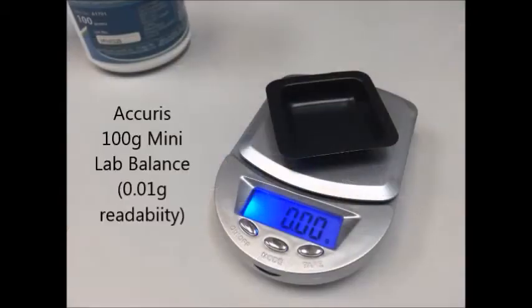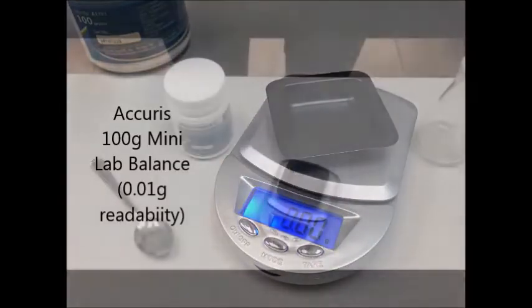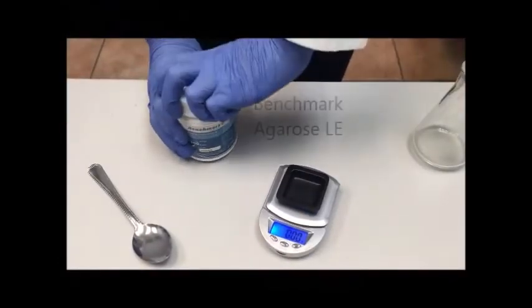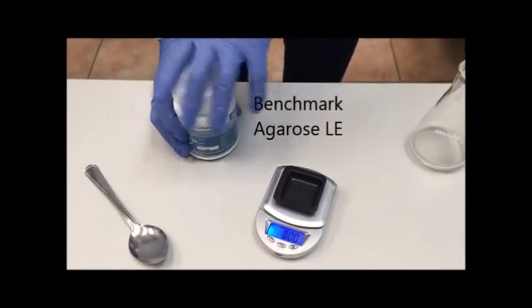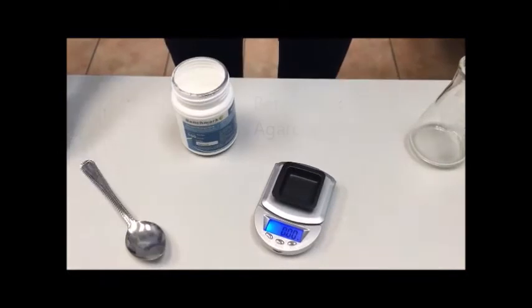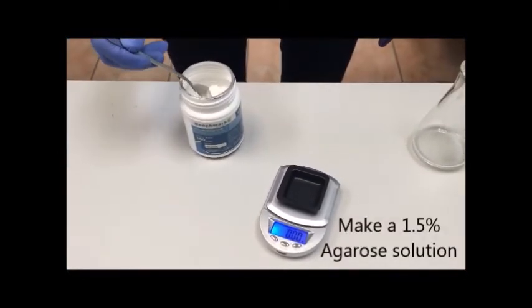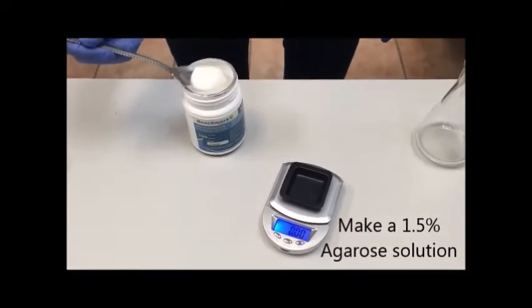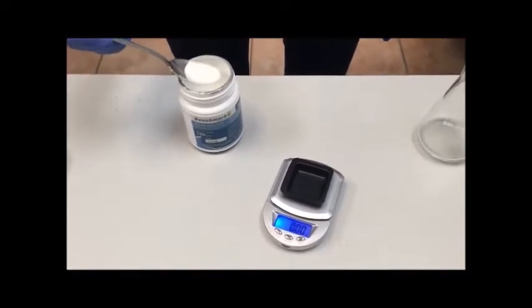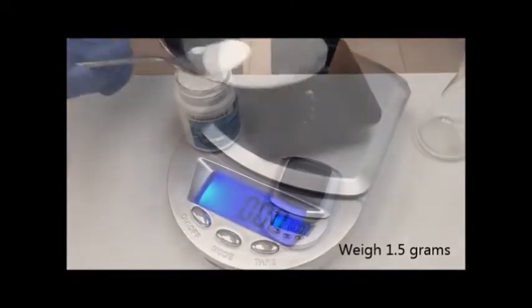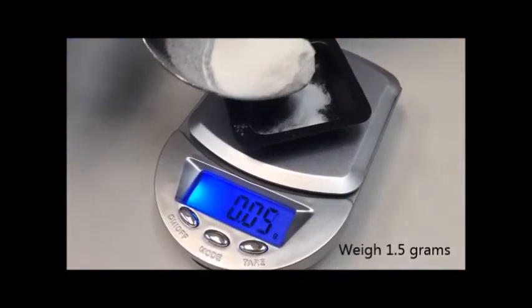The next step is to make our agarose solution. We're going to be using the Acurus 100G Mini Balance to weigh out some agarose powder. Here, we're making a 1.5% agarose solution, which is suitable for the size range of DNA we'll be separating. First, we weigh out 1.5 grams of agarose powder.